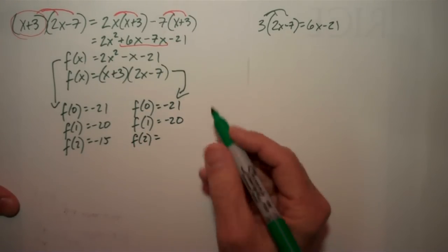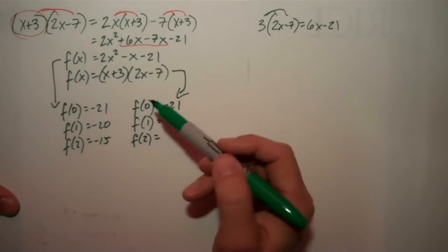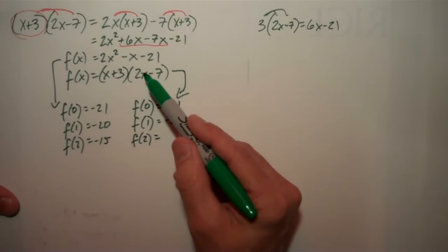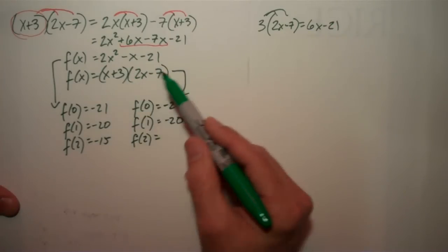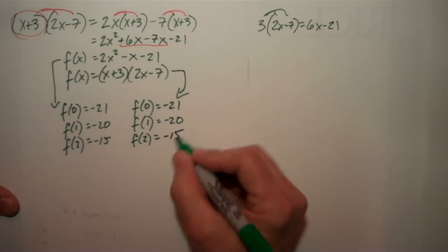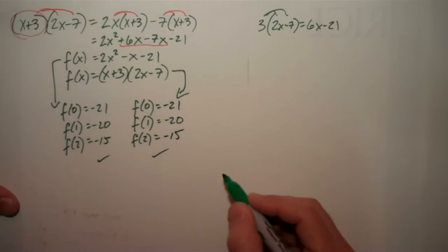And f of 2, 2 plus 3 is 5, 2 times 2 minus 7, that's 4 minus 7 is negative 3. 5 times negative 3 is negative 15, and all right, they match up.